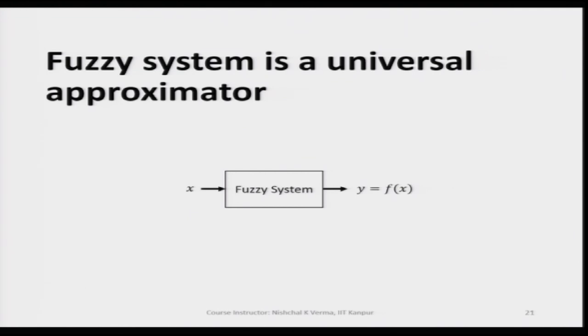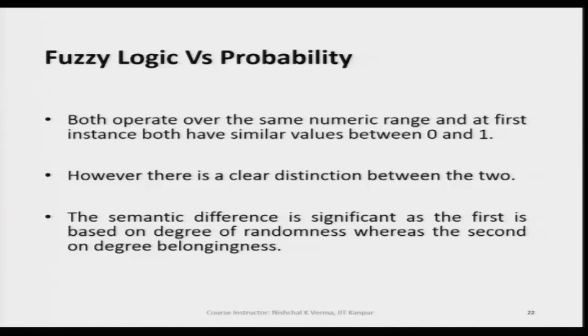A fuzzy system is a universal approximator — it can approximate any function. If the function is linear, we do not need a fuzzy system, but if the function is highly non-linear or very complex, then fuzzy logic can approximate it by finding the function using fuzzy logic. Let me also discuss fuzzy logic versus probability, as many of us often get confused because both operate on values between 0 and 1.